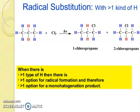You will get two different products, one chloro-propane and two chloro-propane. So when there is one type of hydrogens, then there is one option for radical formation. And therefore, one option for monohalogenation product.